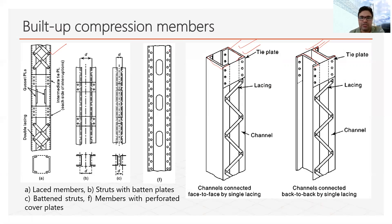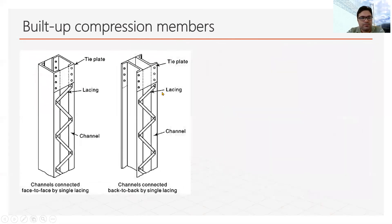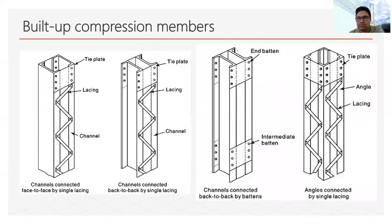We can see more isometric views: this case shows the batten system, in which there is no inclined member. In this other case, inclined members are also used — that is the lacing system. Whenever we use the lacing system, we generally provide a tie plate at the top and at the bottom. This shows the angle sections being connected using the lacing system, with the tie plate provided at top and bottom to hold everything together.